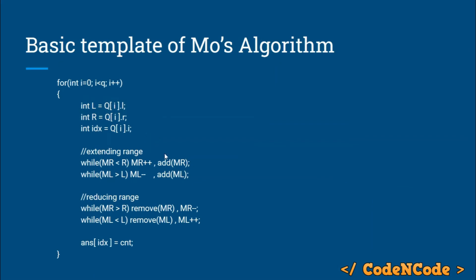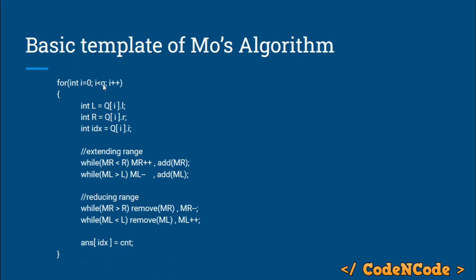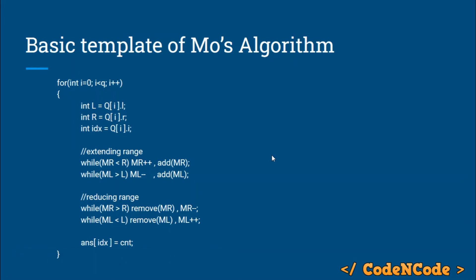So you see there are four while loops to answer the i-th query. Q is the number of queries and we loop from 0 to Q minus 1. L and R are the left and right of the current query, and IDX is the index of the current query. To extend the range: while MR < R, MR++ then add MR; while ML > L, ML-- then add ML. To reduce the range: while MR > R, remove MR then MR--; while ML < L, remove ML then ML++. After all four while loops we update the answer of index IDX to be count.